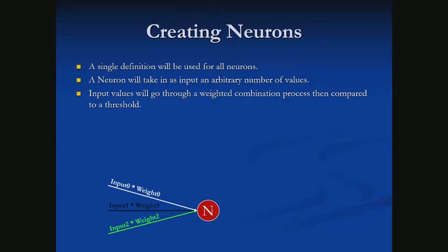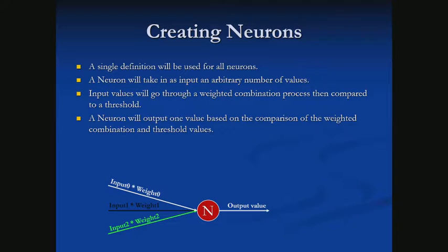We do this weighted combination — each input times each weight — and then add all of those together. We can think of the next step as comparing that result, this weighted sum, to some threshold value. If it's greater than our threshold, we activate the neuron — basically, we return true.